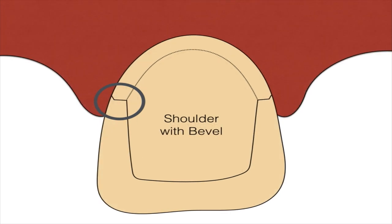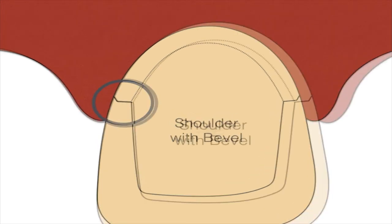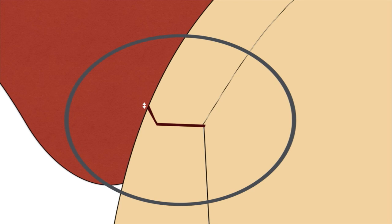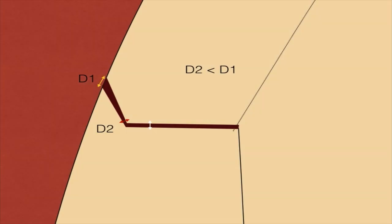Shoulder with bevel is given when you are providing a metal-ceramic restoration and you want the metal to burnish well to the margins. However, when using a shoulder bevel, you will have to use a sub-gingival margin. The bevel is thinner in the sloping area and wider in the flat area, giving you better adaptation.